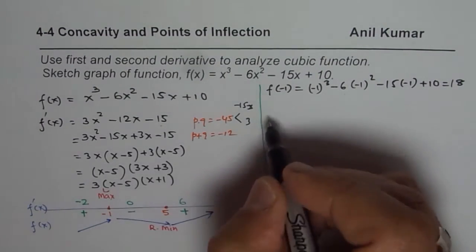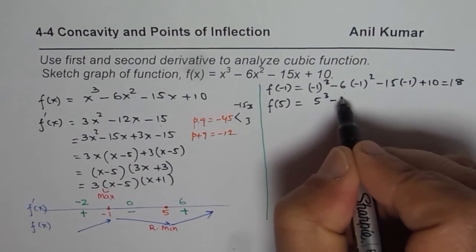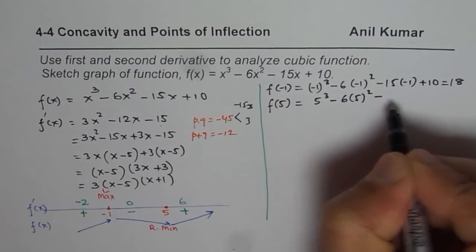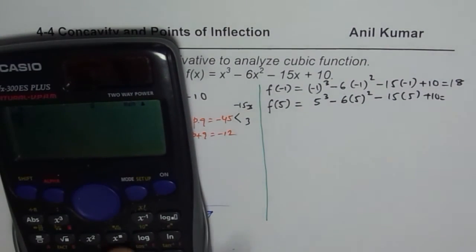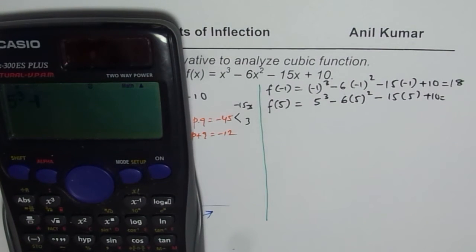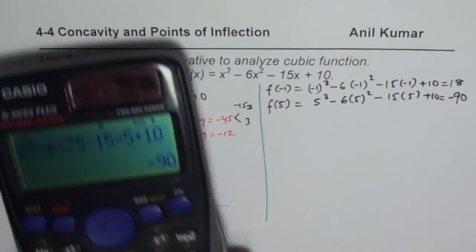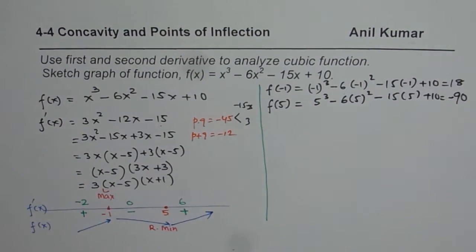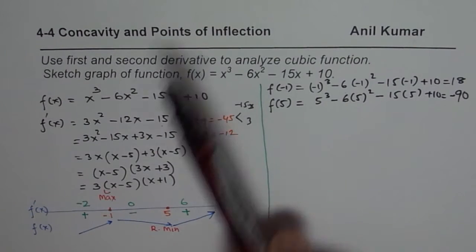Now let us find f(5). Substituting x = 5: f(5) = 5³ − 6(5²) − 15(5) + 10 = 125 − 150 − 75 + 10 = −90. So the minimum value is −90 at x = 5. That is one way of finding the extrema using the first derivative test.